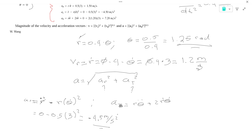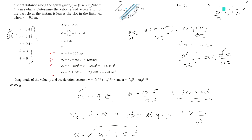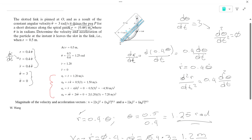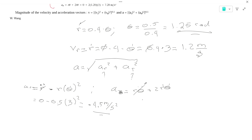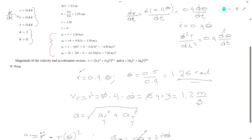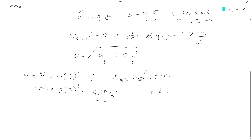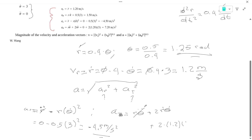Now the tangential acceleration is r times theta_dotdot plus 2 times r_dot times theta_dot. R is 0.5 and theta_dotdot is 0, so we don't need that first term. We only need 2 times r_dot, which is 1.2, times theta_dot, which is 3. So 2 times 1.2 times 3 equals 7.2 meters per second squared.